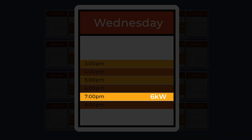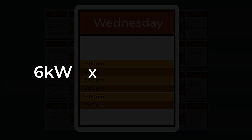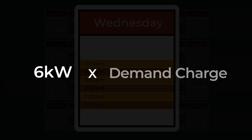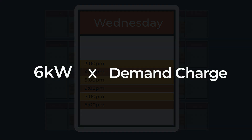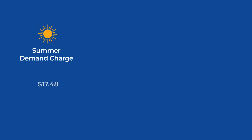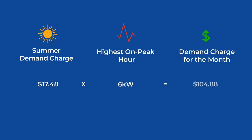They take the number of kilowatts you use during that hour and multiply it by the demand charge in your plan. If your plan says the demand charge during the summer is $17.48 and your highest on-peak hour used 6 kW, your demand charge would be $104.88.